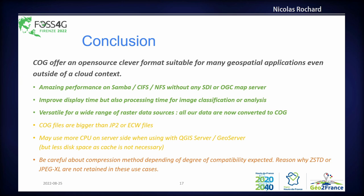In conclusion, COG offers an open source format suitable for many geospatial applications even outside a cloud context - without an HTTP server or extra S3 bucket. It delivers amazing performance even over Samba share, CIFS, or any NFS. My test was from an SFTP server for the screencast. It improves display time but also processing times - for example, we compute viewshed analysis on wind turbines across the whole region each month. Using the raw DEM in TIFF even with overviews took more than eight hours, but directly using the COG took less than six hours.